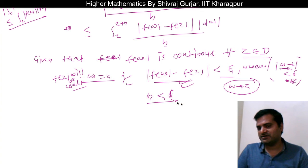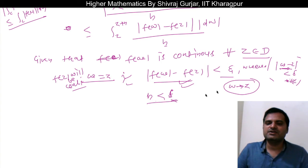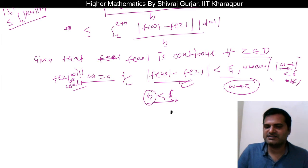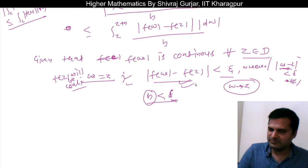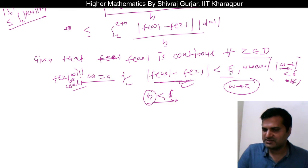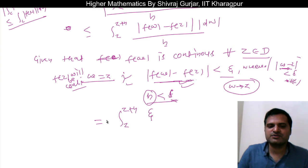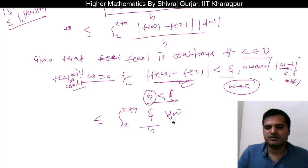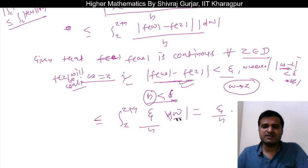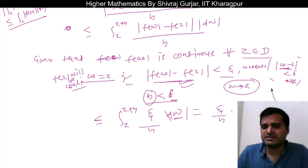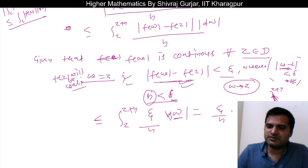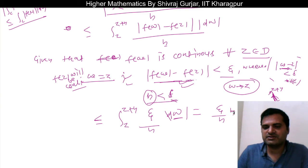So we can say that the integral from z to z+h of |f(ω) - f(z)| |dω| is less than epsilon times |dω|. Now, since the path is independent and if we take a straight line, the integral of |dω| from z to z+h gives |z+h - z| = |h|. So the whole expression is less than epsilon times |h| divided by |h|, which gives just epsilon.